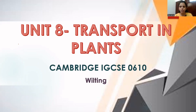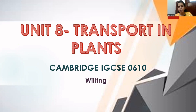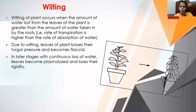As the water column present in the xylem vessels of the stem and root moves up through the plant, the roots absorb more and more water from the soil. If the rate of transpiration is higher, the rate of absorption of water by the roots from the soil will also be higher.